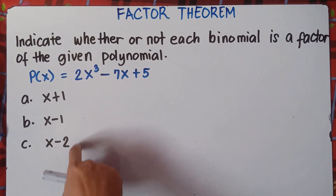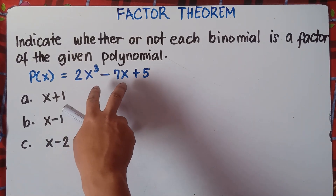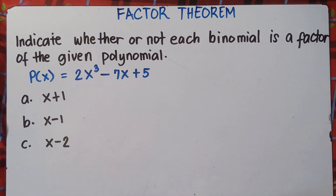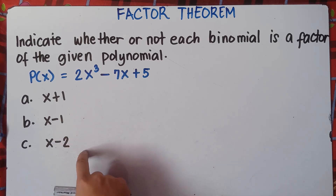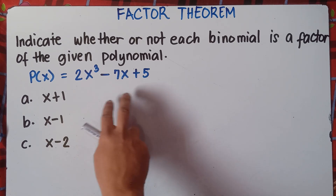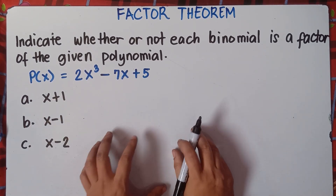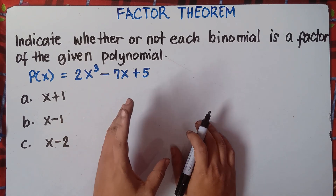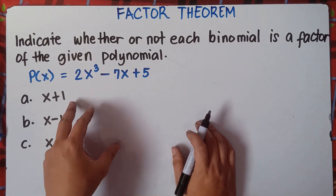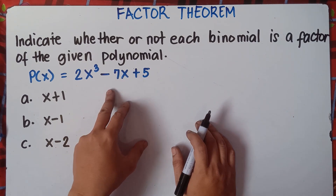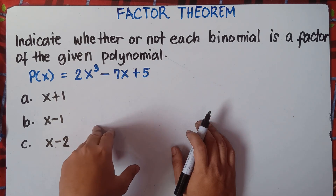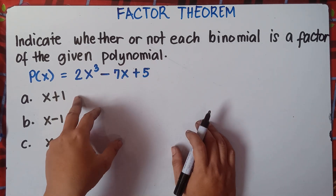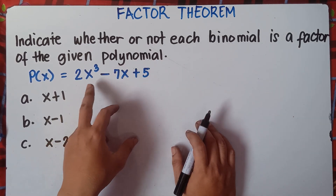To check if a binomial is a factor of the given polynomial, you just need to evaluate. You get the value of x from the given binomial, and once you get x, you substitute that value into the given polynomial. If the answer is 0, therefore the binomial is a factor. If the answer is not 0, therefore it is not a factor. So just simply substitute the value of x into the polynomial.